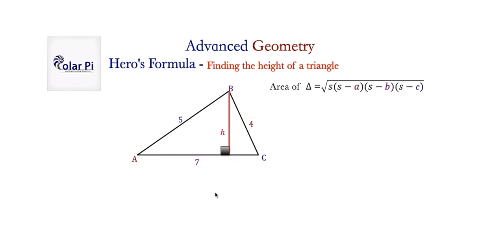Hero's formula for the area of a triangle says that the area of the triangle is equal to the square root of S times S minus A times S minus B times S minus C, where A, B, and C are the measure of the three sides. Color-coded for you.